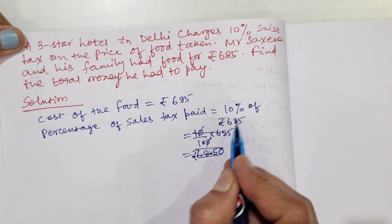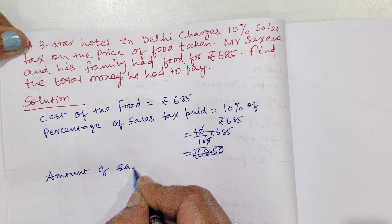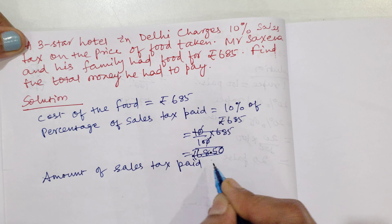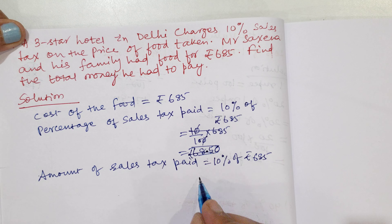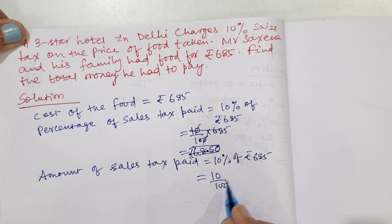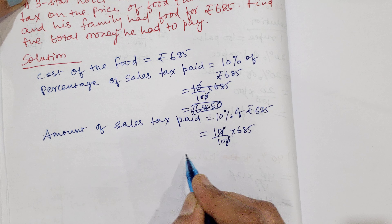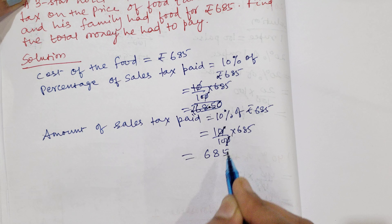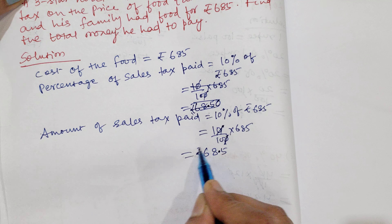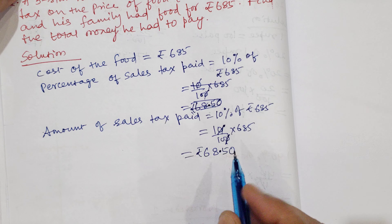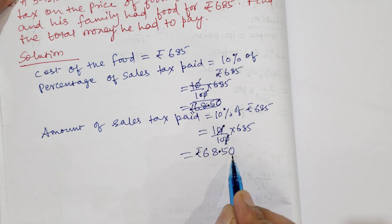So, amount of sales tax paid = 10% of Rs. 685 = 10/100 × 685 = 685/10 = Rs. 68.50. Since this is in rupees, there are two digits after the decimal point, so we add a zero, giving us Rs. 68.50 as the sales tax paid by Mr. Saxena.